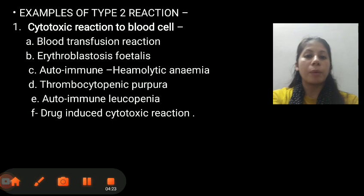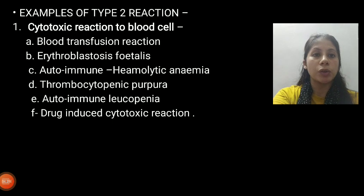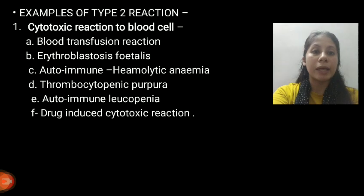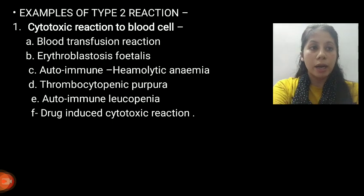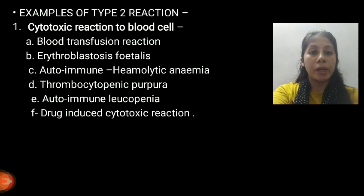The examples of Type 2 Reaction include cytotoxic reactions to blood cells: first is Blood Transfusion Reaction, second is Erythroblastosis Fetalis, which is a disorder of newborn babies — you have already read about this in Physiology lectures. Other examples are Autoimmune Hemolytic Anemia, Thrombocytopenic Purpura, Autoimmune Leukopenia, and Drug-Induced Cytotoxic Reaction.